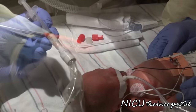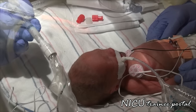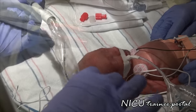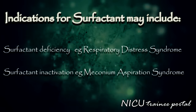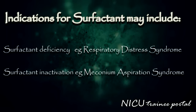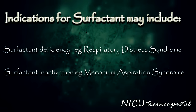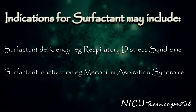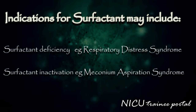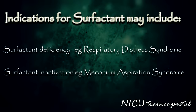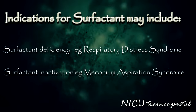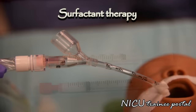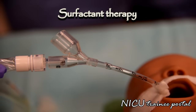Surfactant deficiency may result in respiratory distress or respiratory failure in preterm, late preterm, or term infants. Indications for exogenous surfactant replacement therapy include infants who have surfactant deficiency, such as preterm infants with respiratory distress syndrome, or surfactant inactivation, such as infants with meconium aspiration syndrome. Surfactant may be given as either prophylactic or rescue treatment and is delivered via the intratracheal route.